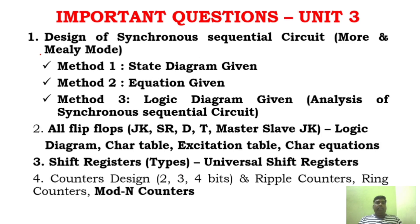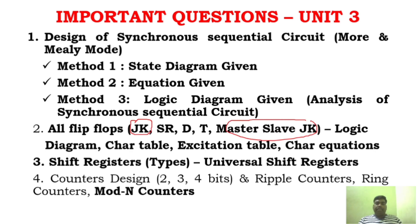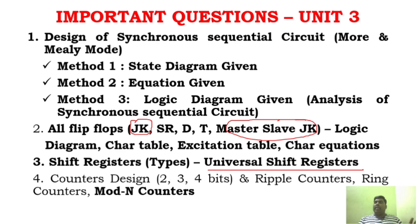For Unit 3, focus on sequential circuits and all flip-flops. The most important flip-flop is the JK flip-flop, and also master-slave flip-flop and SR flip-flop. Universal shift register is also a most important topic. Ripple counter and ring counter are important — there are strong chances these appear. Unit 2 and Unit 3 together form the most important part.